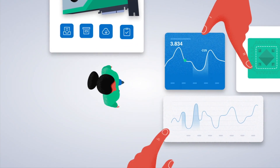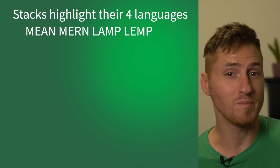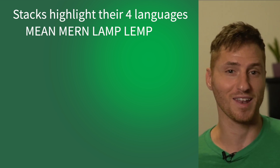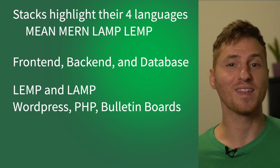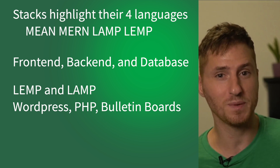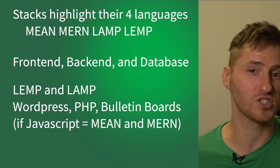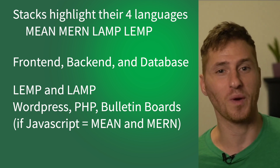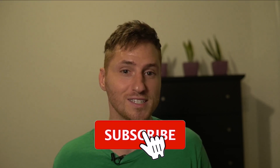To recap: one, a tech stack usually highlights its four main languages — the main ones are MEAN, MERN, LAMP, and LEMP. Two, the three parts to a system are the front-end, the back-end, and the database. Three, LEMP and LAMP are good for WordPress, PHP projects, bulletin boards, or you can choose your own software suite — whereas if you want to develop a JavaScript app, then MEAN and MERN are the way to go. And four, Linode has one-click apps to get you up and running in literally minutes. I'll put a link below with our documentation so you can learn more about this topic. Give a thumbs up if you enjoyed this, and feel free to subscribe and hit the bell icon to get notified of new episodes. Thanks.